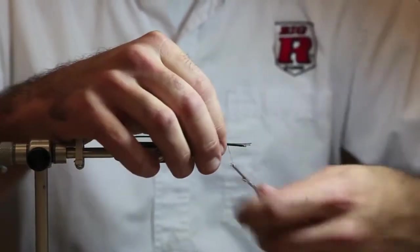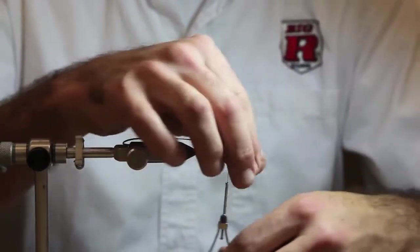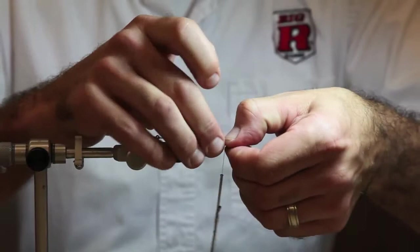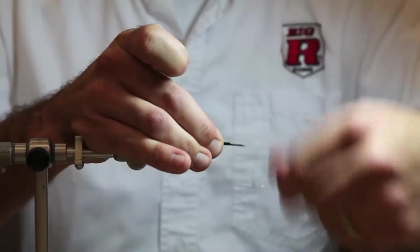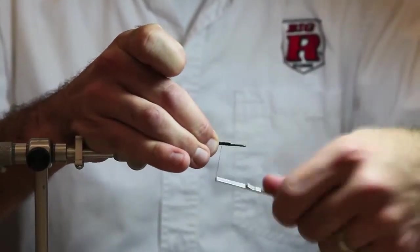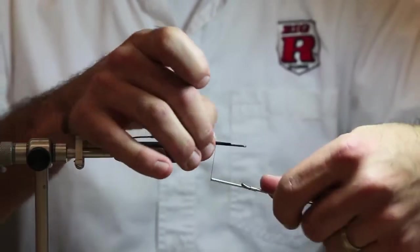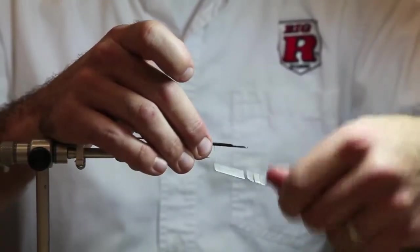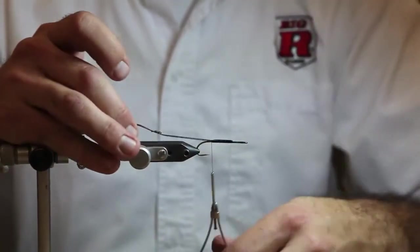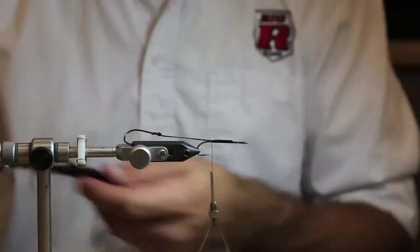I fished this fly quite a bit on the Skagit. Done really well with this fly up on the Skeena system. And the Dean River, this fly actually did awesome. I think any steelhead river where they like larger flies, you can't really beat this fly.